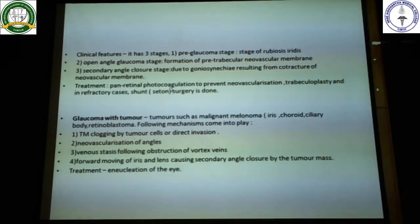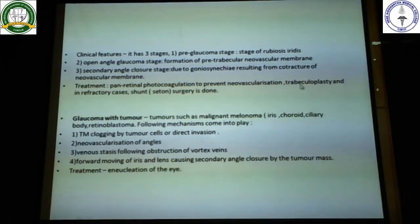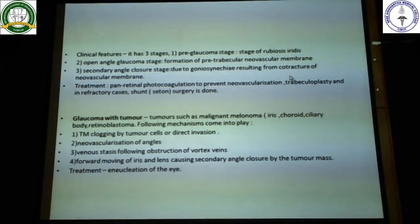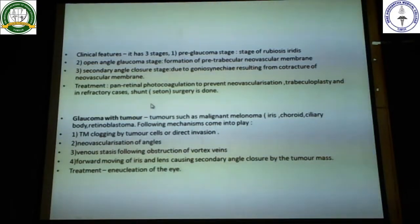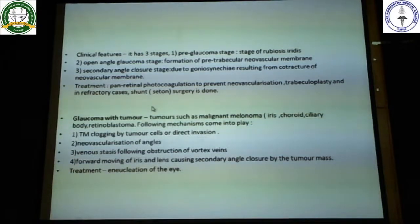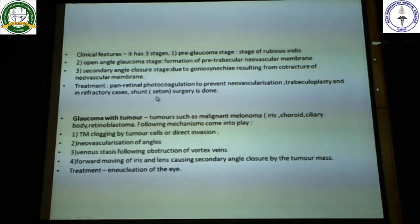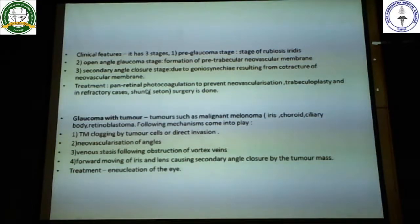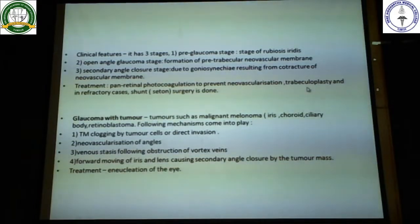Once the VEGF stimulus is reduced, you go ahead and treat the glaucoma - more often with an augmented procedure such as trabeculectomy with antimitotic agents or trabeculectomy with a shunt. Remember: it's a refractory type of glaucoma, treatment is not complete without treating the retina. You have to do retinal photocoagulation and simultaneously treat the glaucoma with trabeculectomy, probably with a shunt, for a better result.